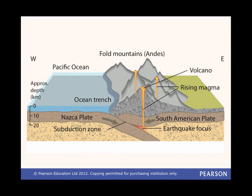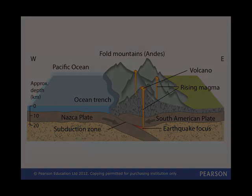A destructive plate boundary is where one plate is pushed against another. The new crust created at constructive plate boundaries is called oceanic crust and is denser than the older continental crust. So, at a destructive boundary, the denser oceanic crust is pushed under the lighter continental crust and destroyed in a process called subduction. This is a violent process that produces a lot of energy.